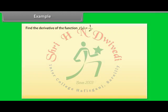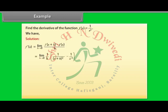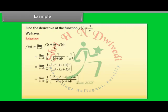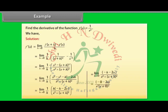Find the derivative of the function f(x) = 1/x². Solution: We have limit h→0 of [f(x+h) − f(x)] / h = limit h→0 of [1/(x+h)² − 1/x²] / h. By calculating it, we get f′(x) = −2/x³.